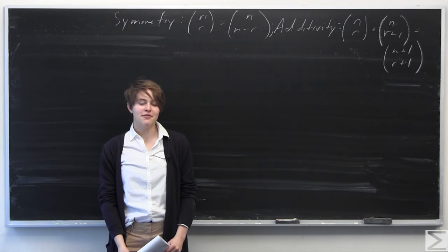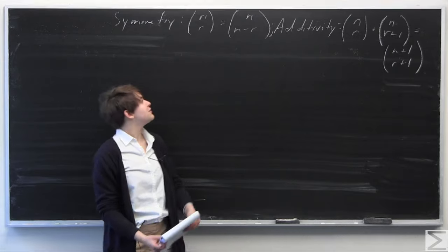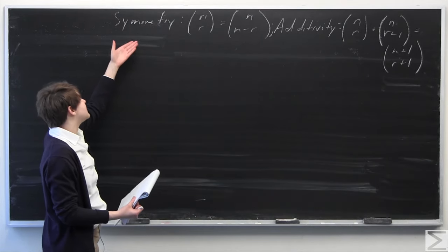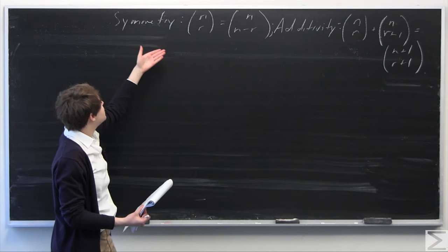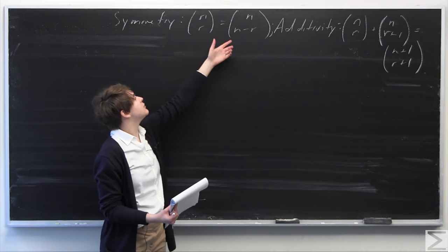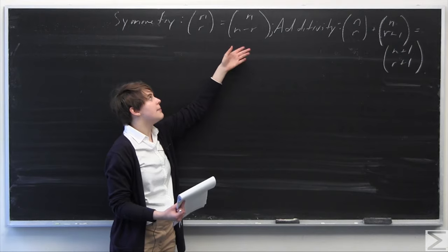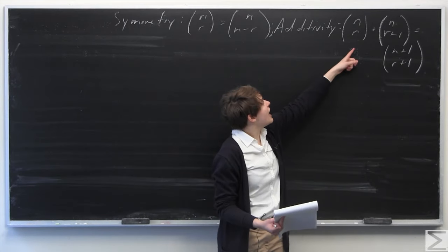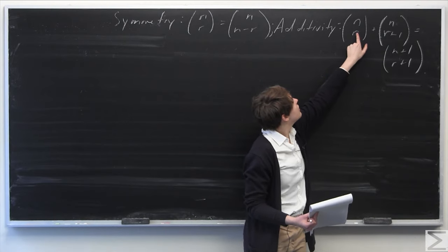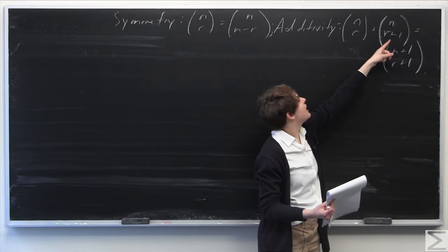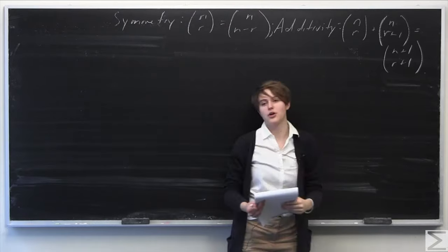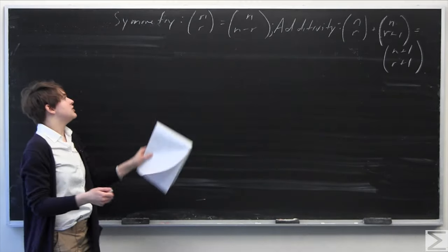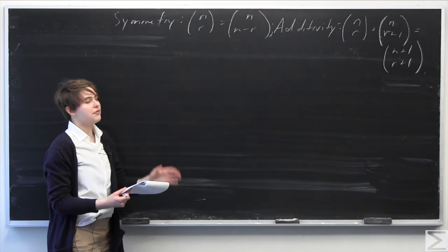This week's problem of the week asks you to prove two facts about binomial coefficients. It asks you to prove the symmetry property, which is that n-choose-r equals n-choose-(n minus r), and also the additivity property, which is that n-choose-r plus n-choose-(r plus 1) equals (n+1)-choose-(r+1). I'm using 'over' as a way to simplify speaking about binomial coefficients.